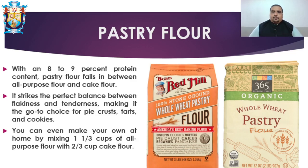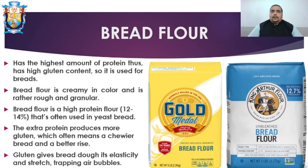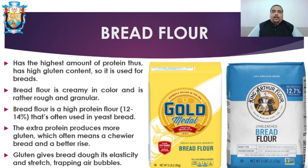Next is bread flour. As the name suggests, this flour is used to make bread and has the highest amount of protein, thus high gluten content. Bread flour is creamy in color and rather rough and granular. It is a high-protein flour with 12 to 14 percent protein content, and is often used in yeast breads.